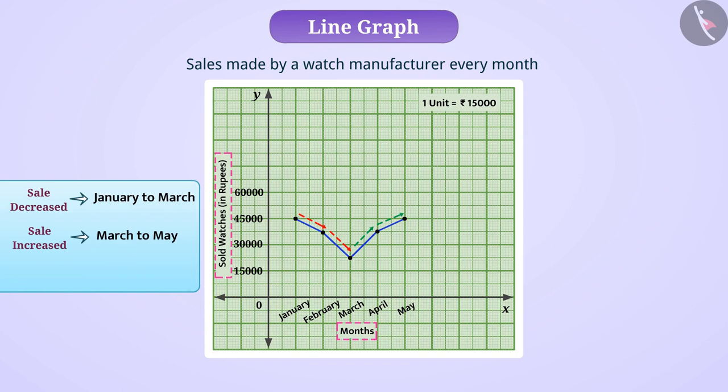Similarly, among all the months shown, the least number of watches are sold in March.